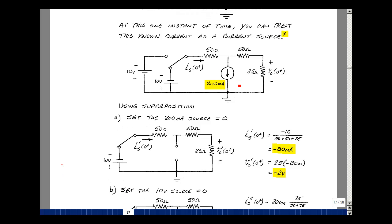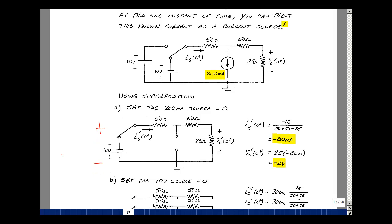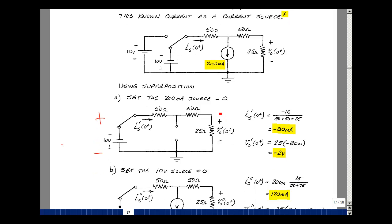Using superposition, I'll set the source equal to zero, which makes it an open circuit. The current that's flowing in this circuit would be the voltage in this direction divided by the total resistance. This equals minus 10 volts divided by 50 plus 50 and 25, minus 80 milliamps. That current also flows through this 25 ohm resistance. The voltage would be multiplying that current by 25. This is the value of I sub S and Vout due to the first source at time T equals zero plus.